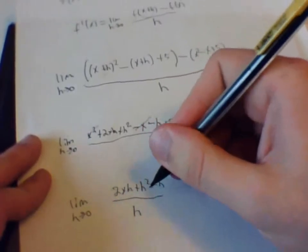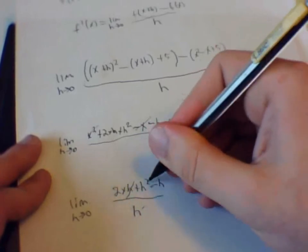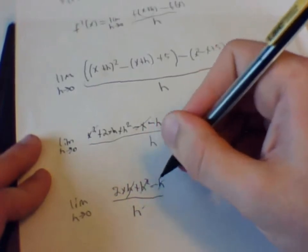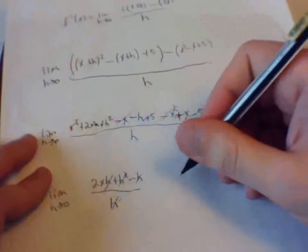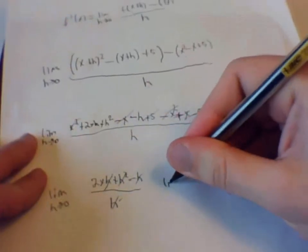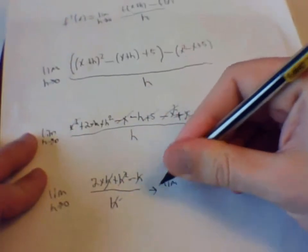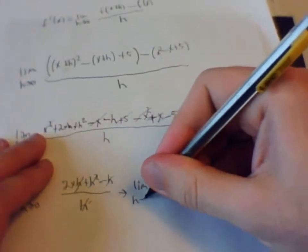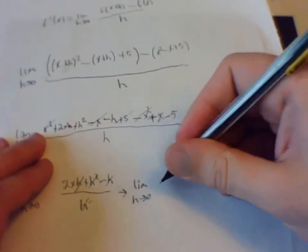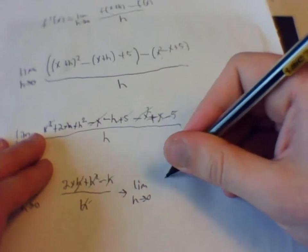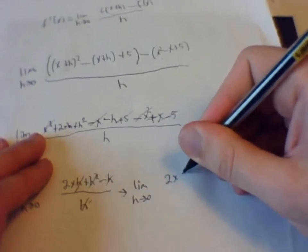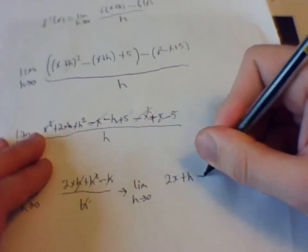You can see all the h's. So we are going to cancel those out. Which is going to leave us with the limit as h goes to zero. It is going to be 2x plus h minus 1.